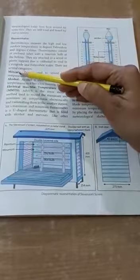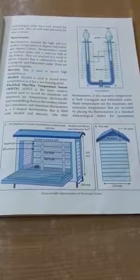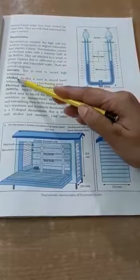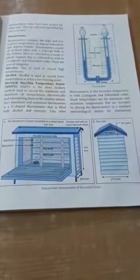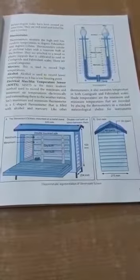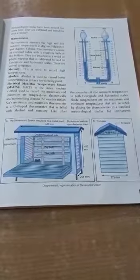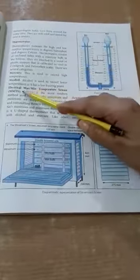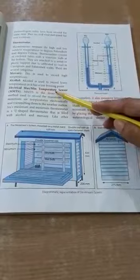There are several categories. First one, mercury. This is used to record high temperatures. Next is alcohol. Alcohol is used to record lower temperatures as it has a low freezing point. Next, electrical maximum or minimum temperature sensor, MMTS.